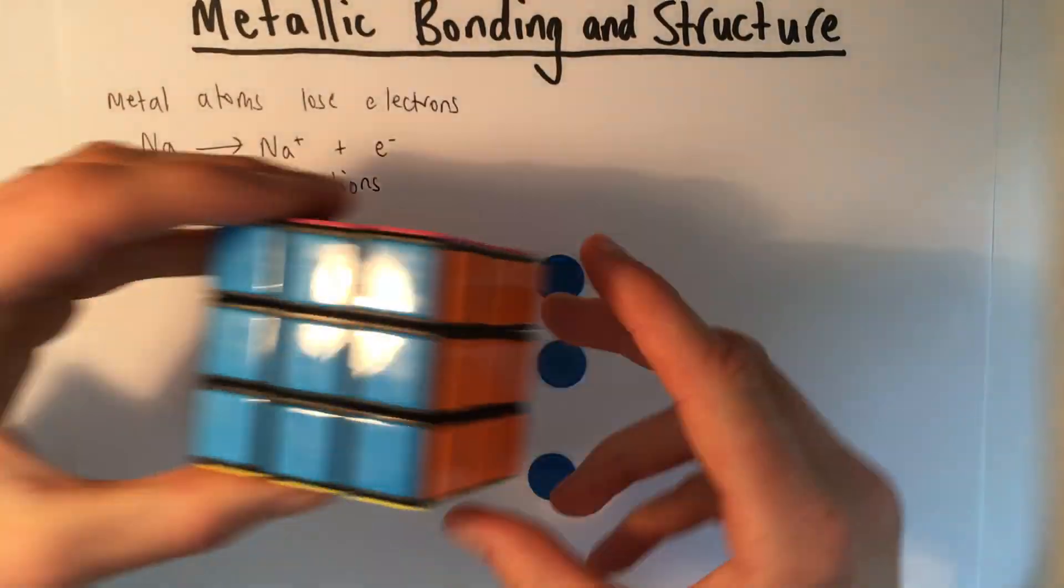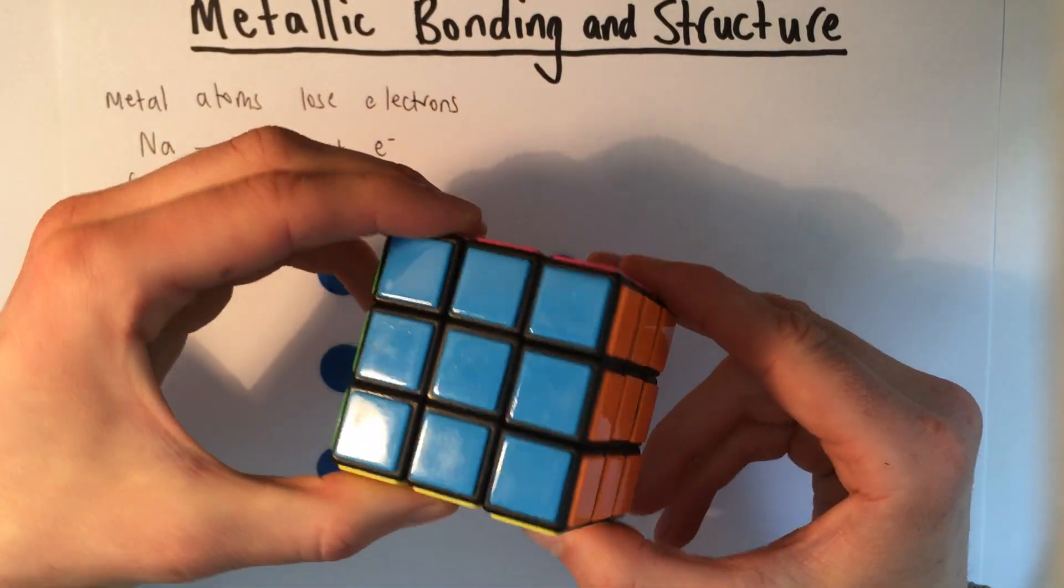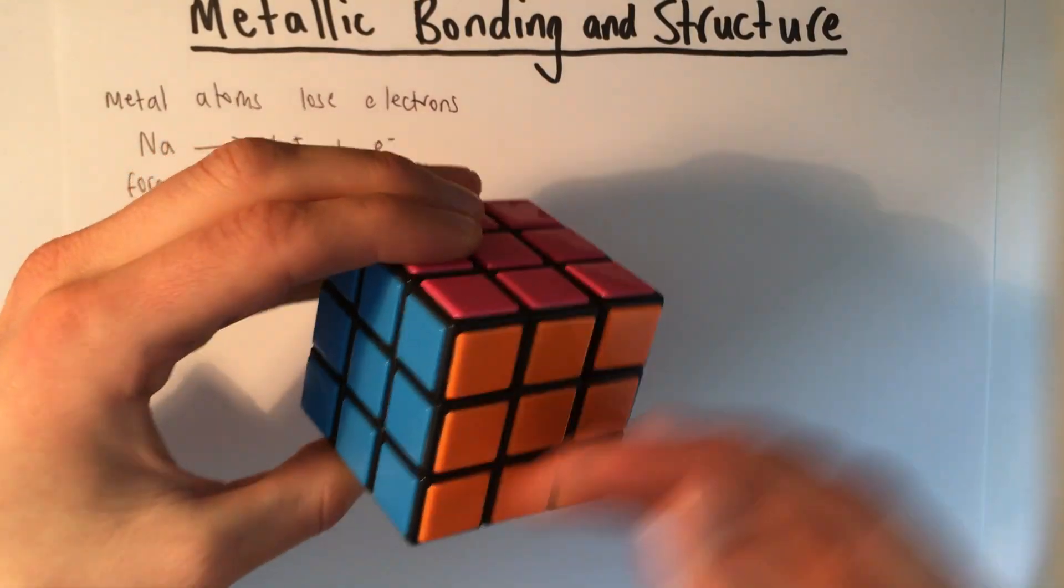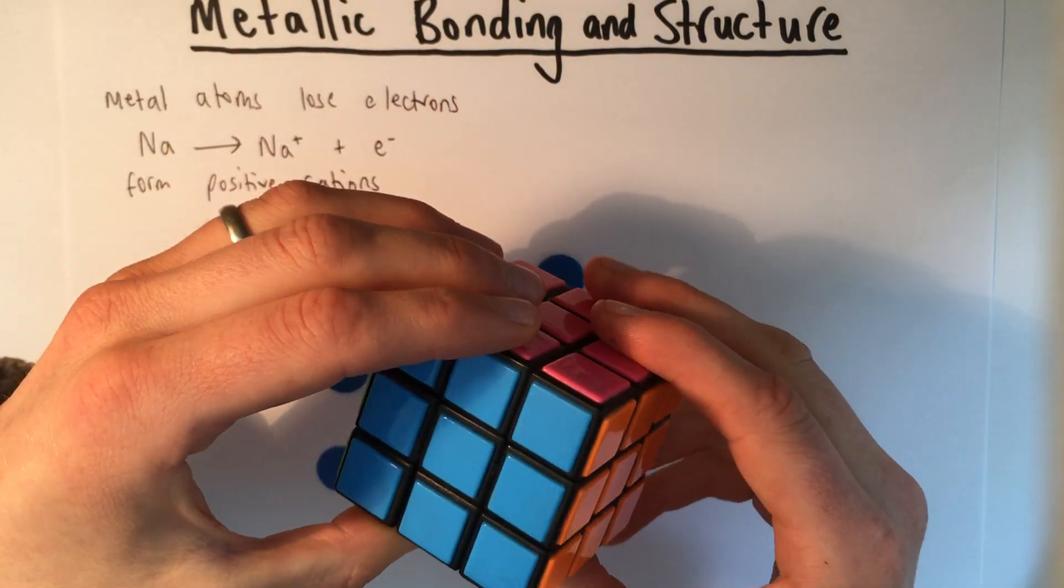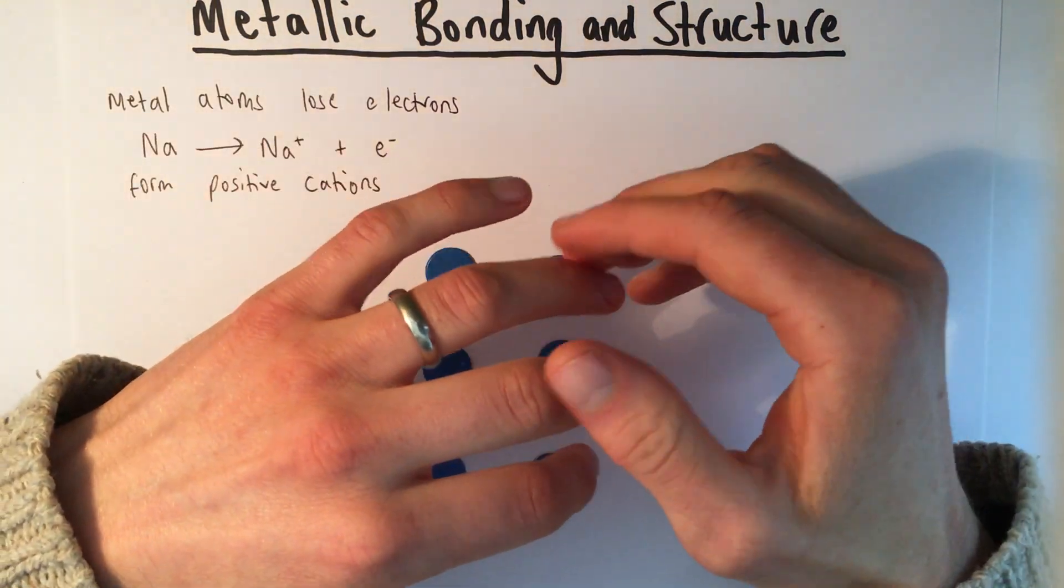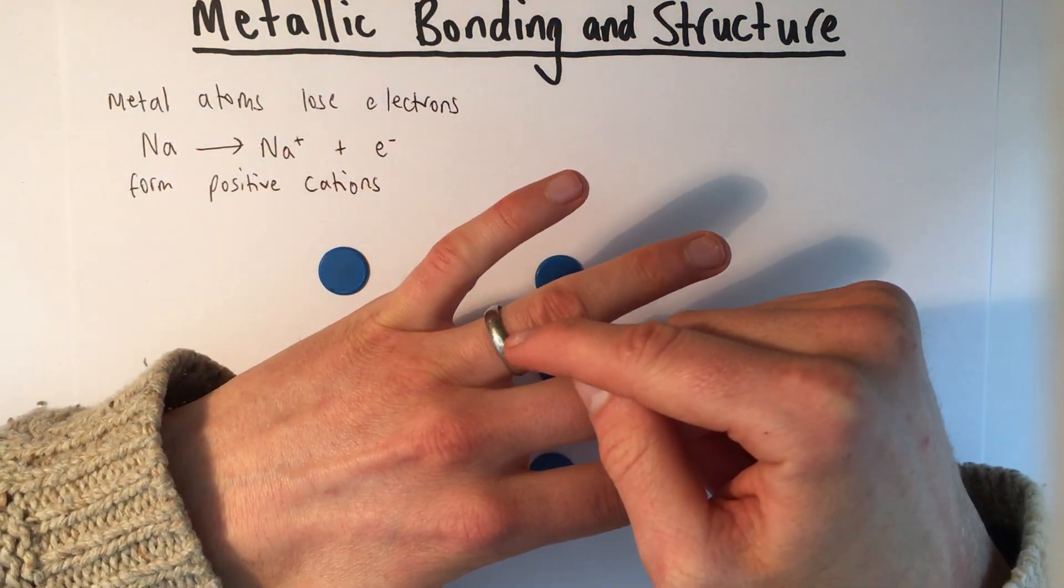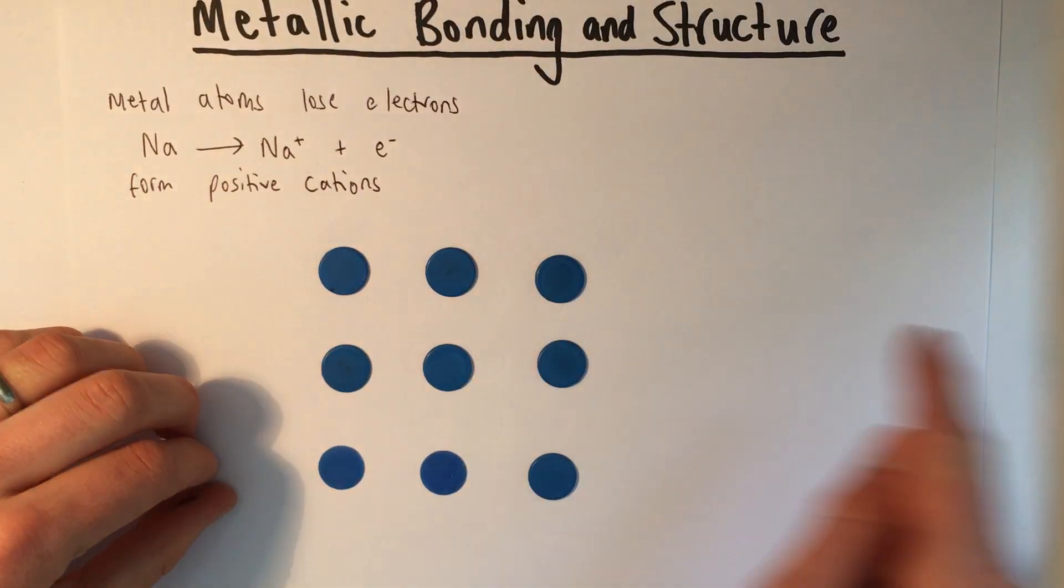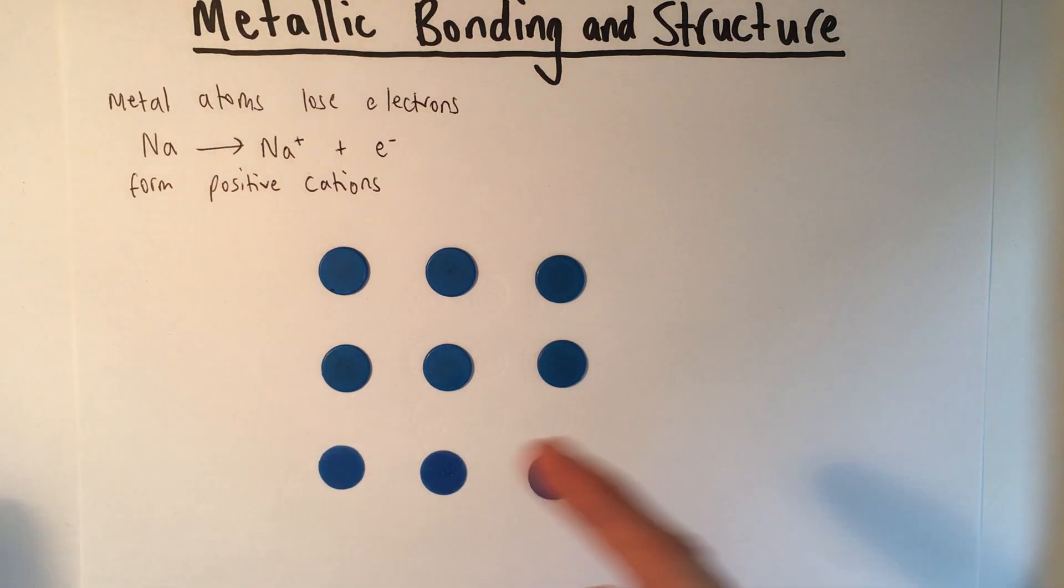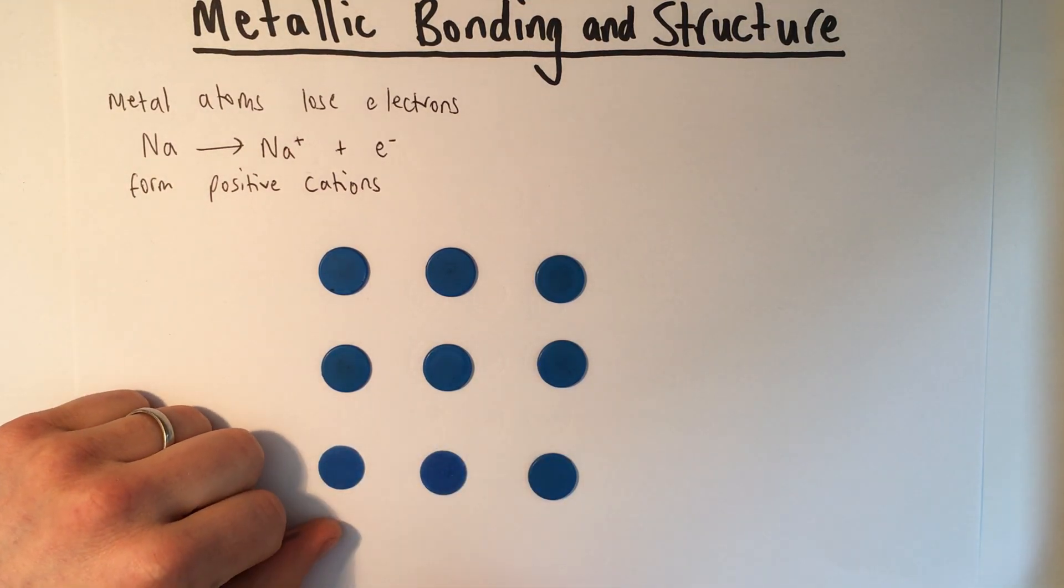Of course, this is a 2D representation. In reality, we're in 3D. So there's rows, there's columns, and there's also that third dimension. I've just shown you 3 by 3. In reality, atoms are so small that even if you just have a really small bit of metal, there are billions of metal cations in the rows and in the columns and going in and out in even a tiny bit of metal.